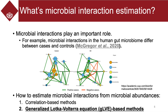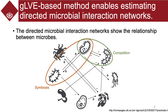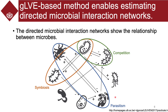We focused on the second one. The GLVE-based method enables estimating directed microbiome interaction networks. This figure shows a directed microbiome interaction network. We can see some relationships between microbes. Symbiosis is a relationship in which microbes contribute to each other's increase. Competition is a relationship in which microbes contribute to each other's decrease. Parasitism is a relationship between A and B where A contributes to B's increase and B contributes to A's decrease. These relationships are useful for revealing microbiota, and the GLVE-based methods have been widely used.